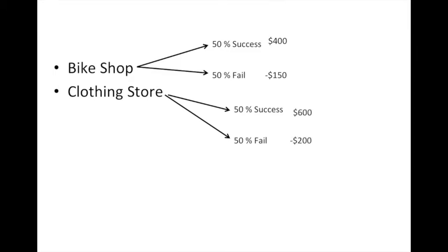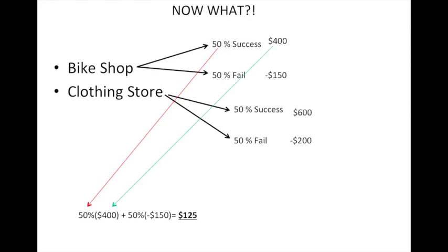The formula is you take the 50% chance of success times the $400 you can make, plus the 50% chance of failure times the -$150 you could lose. That gives you $125 for the bike shop.